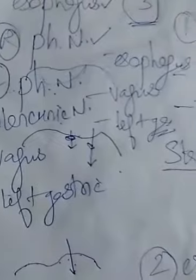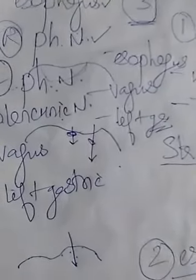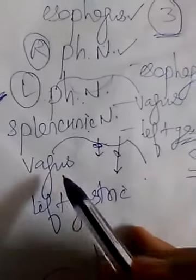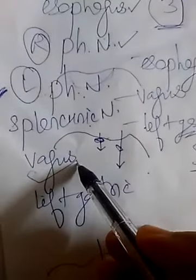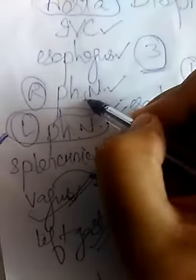Splanchnic nerves also pierce the diaphragm behind the medial arcuate ligament. The vagus nerve is also piercing, the left gastric vessels are also piercing. So to summarize: left phrenic nerve, splanchnic nerves, vagus, left gastric, right phrenic nerve, esophagus, and IVC are all piercing the diaphragm. But the aorta, azygos vein, and thoracic duct are not piercing the diaphragm.